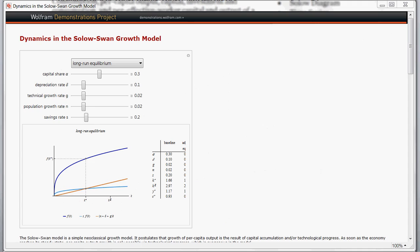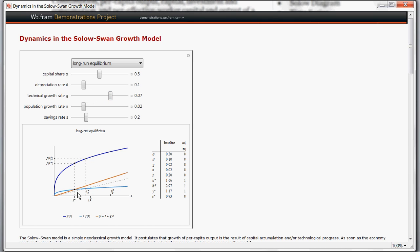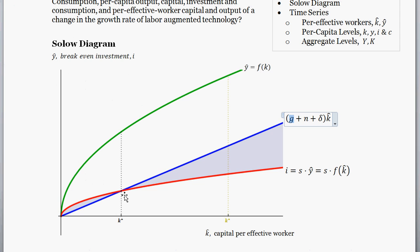Here's a demonstration from Wolfram Alpha, which is a free SOLO model tool. If we increase the technology growth rate g, that shifts up the break-even investment line — the yellow line — pushing down the steady-state level of capital per effective worker. Assuming we start at the initial steady state k-hat-star sub 1, we'd have a new lower steady state k-hat-star sub 2 somewhere down here.